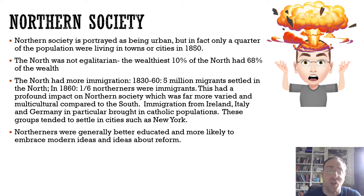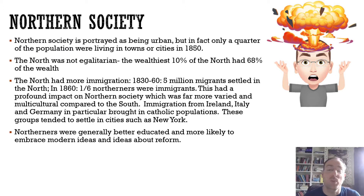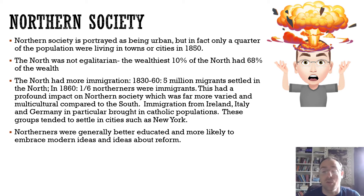Northerners were generally better educated than their contemporaries in the south, and therefore more likely to embrace modern ideas and ideas about reform. Immigration also brought a lot of these new ideas across from Europe. So it is a more diverse society with a greater mixture of religions and backgrounds.